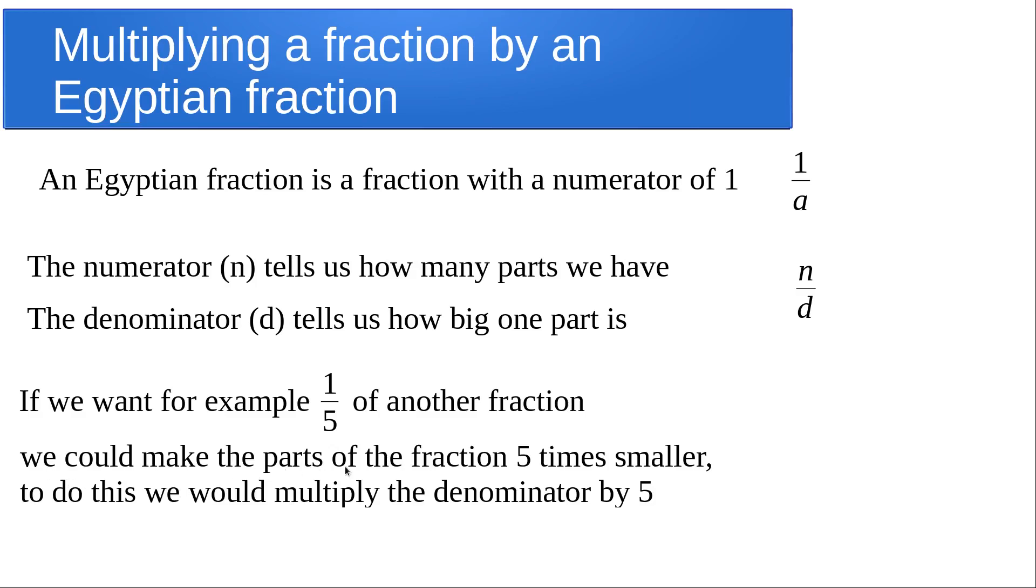So we could make the parts of the fraction five times smaller. To do this we multiply the denominator by five. So we end up with this: if I multiply a fraction by an Egyptian fraction, the only thing that gets multiplied is the denominator.